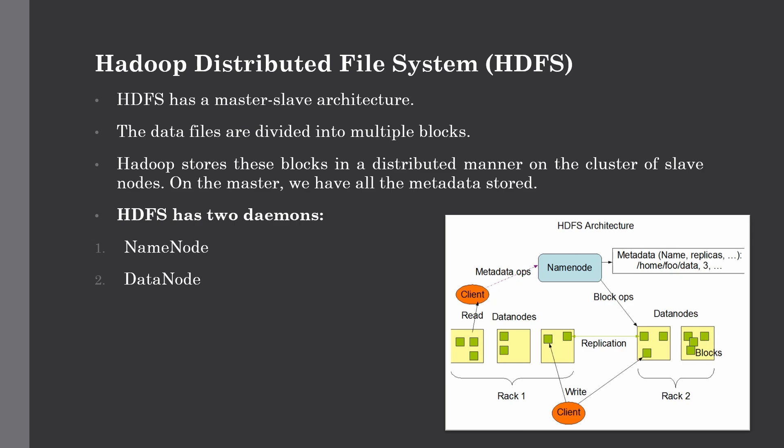HDFS has two daemons: the Name Node and the Data Node. The Name Node runs on the master machine, which is high-end hardware, and is responsible for maintaining, monitoring, and managing the Data Nodes — it acts as the master in HDFS. It records metadata of files like the location of blocks, file size, permissions, and hierarchy. It also captures changes in metadata such as deletion, creation, and renaming of files in the edit logs. It regularly receives heartbeats and block reports from the Data Node, closely working with it to store all information about our data files.